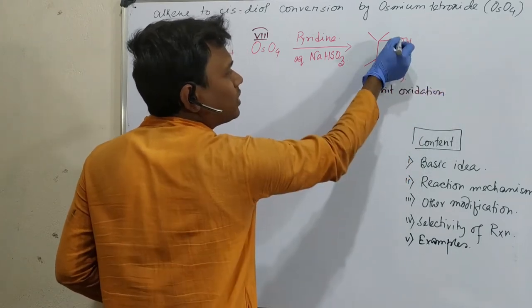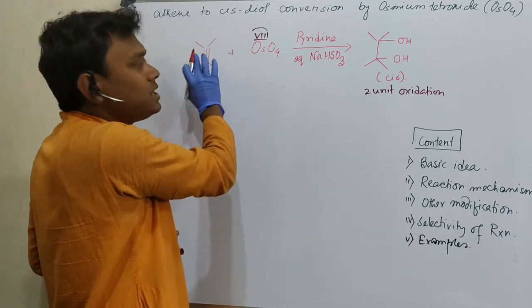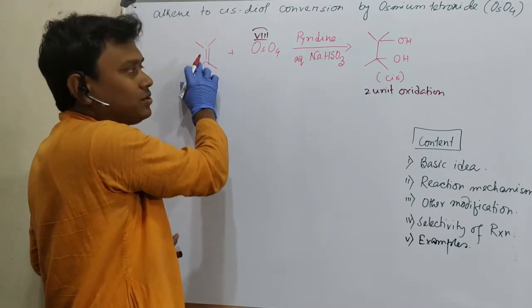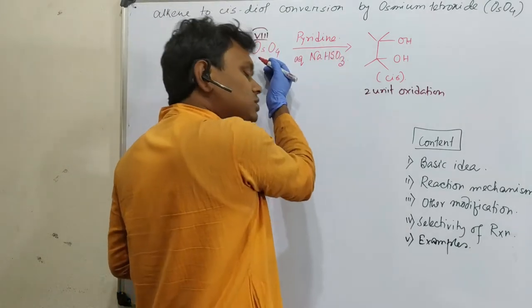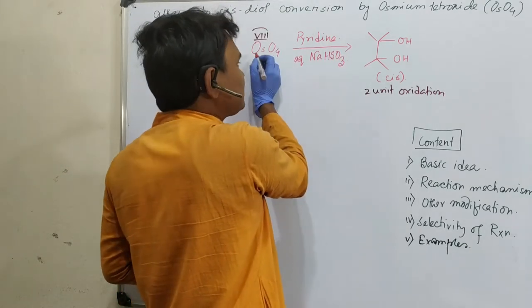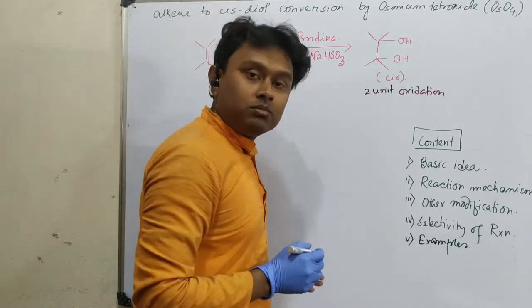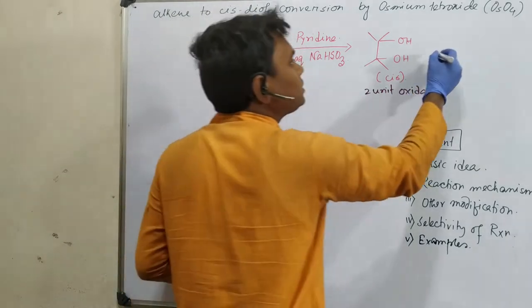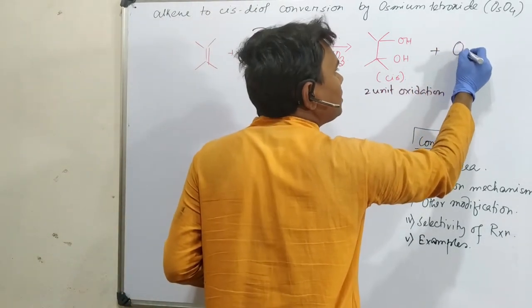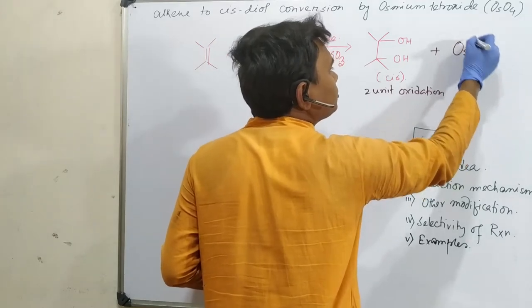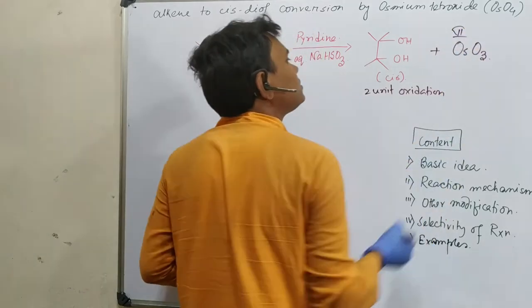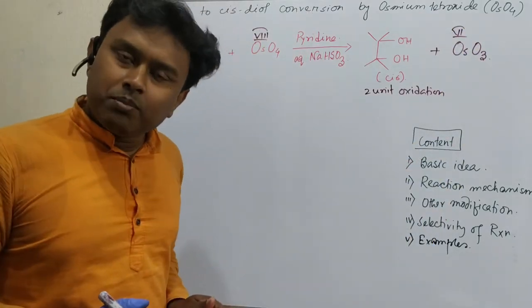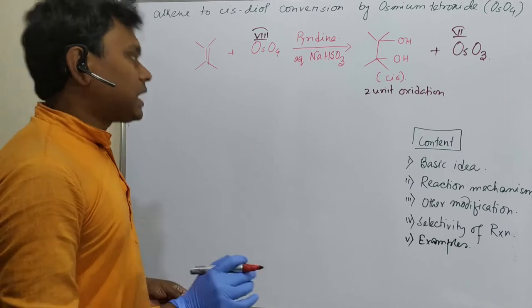See, one heteroatom attached to carbon means carbon oxidation state previously. It was if all are carbon means zero, zero, right? Now plus one, plus one. So two unit oxidation occurs. So correspondingly at this context the oxidant will be reduced two units and that also happened. Better you can think in this way. I'll explain everything.